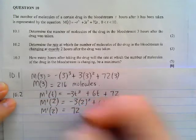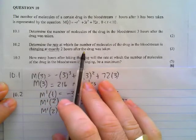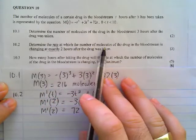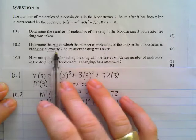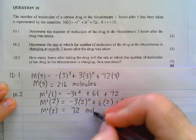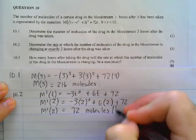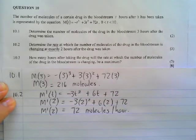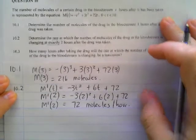So that means 72 at what? What are we going to use as the units? The rate at which the number of molecules is changing after 2 hours. So 72 molecules per hour. Moving to number 10.3, it says the following.